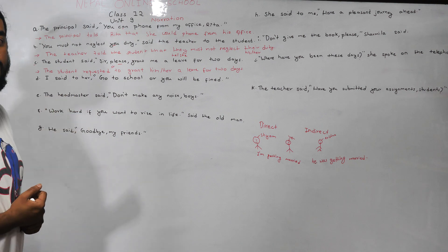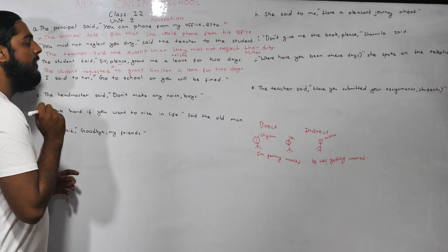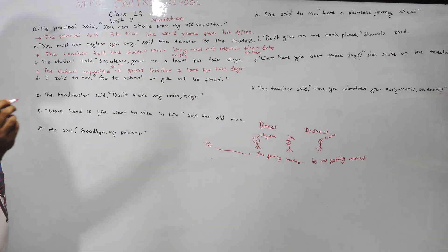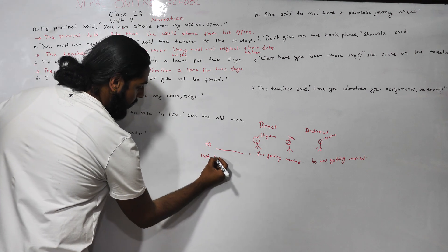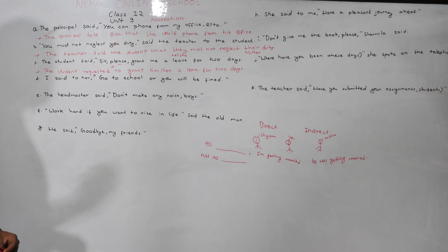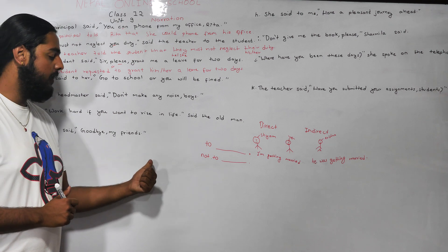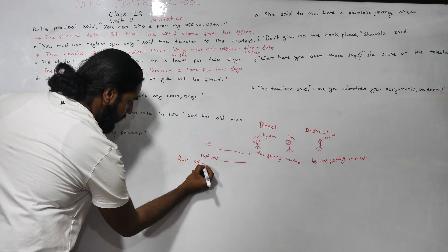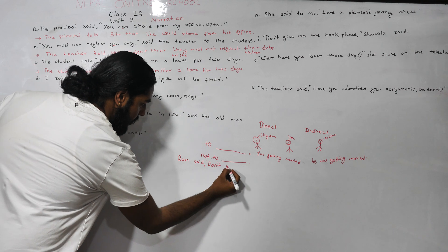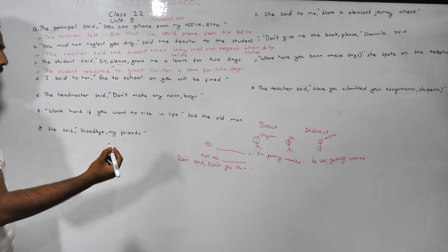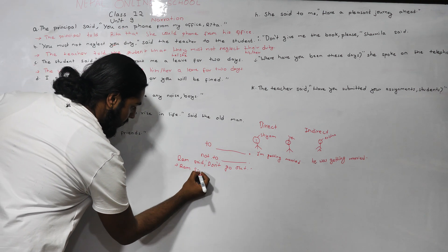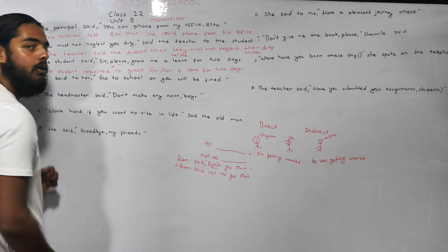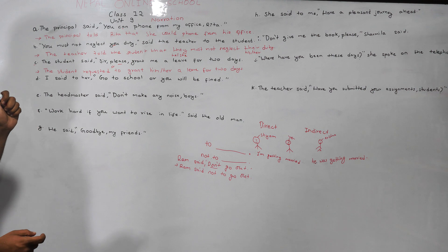For negative imperative sentences, we use 'not to'. For example, 'Don't go out' becomes 'told not to go out.' That's the rule for imperative sentences — positive uses 'to' and negative uses 'not to.'